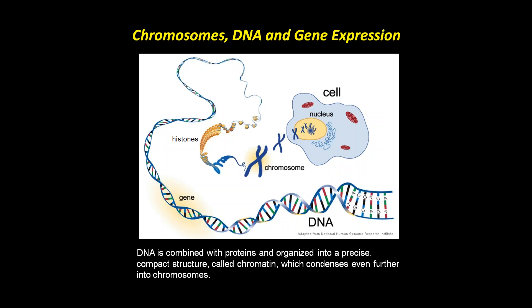In humans, we have 46 chromosomes carrying all our genetic information in the form of DNA. There's actually six feet of DNA in every nucleus in every cell in your body. To fit into the nucleus, DNA must be very efficiently packaged. The cell uses histone proteins to do this — DNA is packaged around histones to form chromatin, which is further condensed into chromosomes. For DNA information to be read, it has to be open and unwound — like unwinding yarn from a ball to knit a sweater.